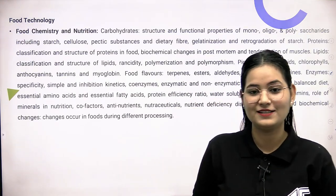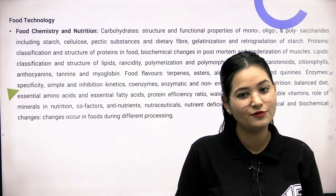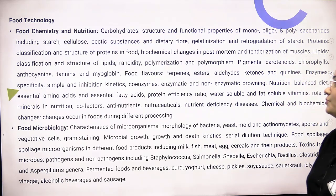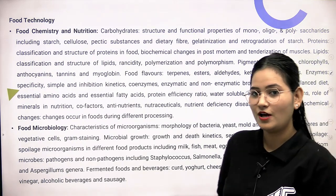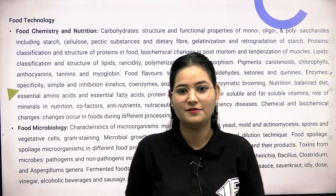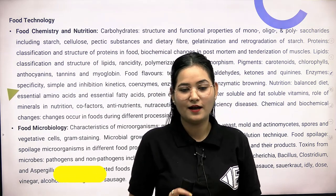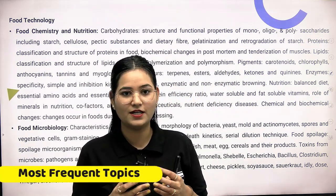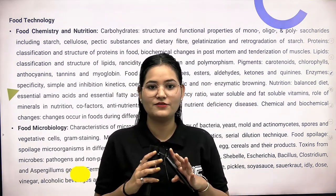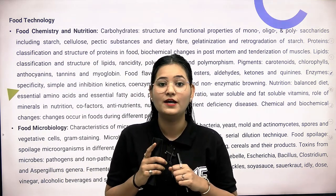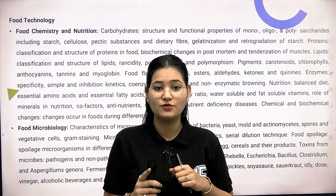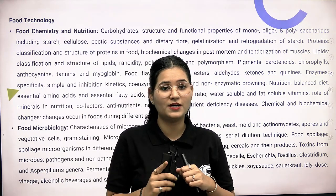First of all we have to look at the syllabus. There are total four sections — the first section is food chemistry and nutrition, and the second is food microbiology. Some students think that food technology has a very small section, but there are topics that are so much for studying, and every topic has weightage.